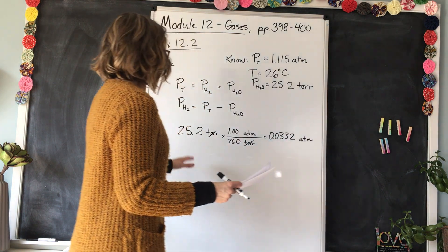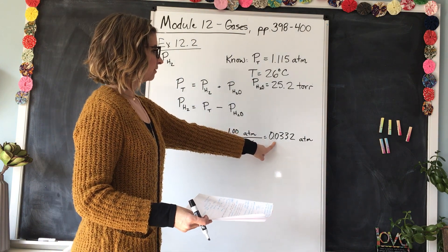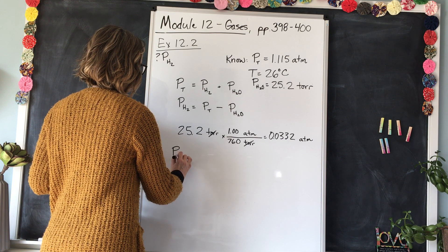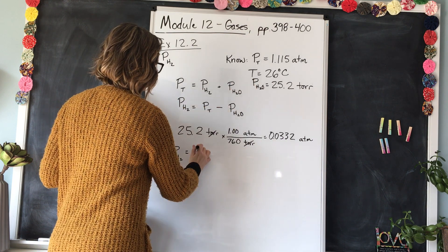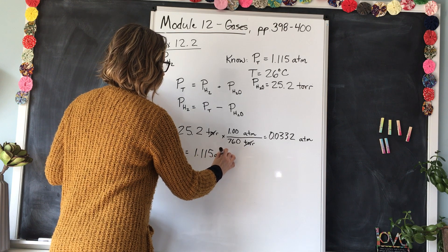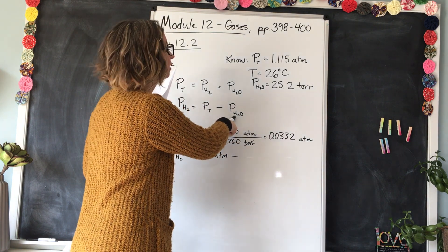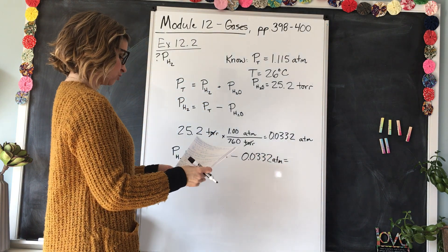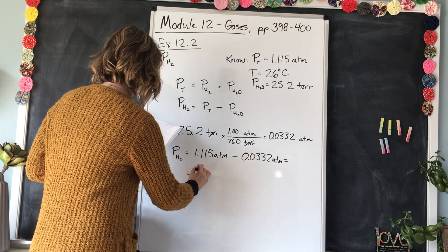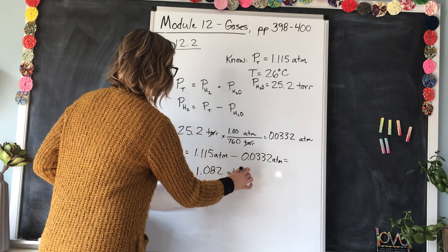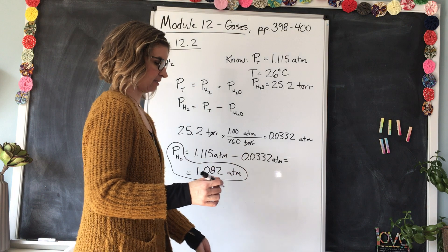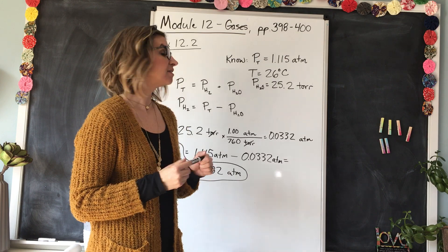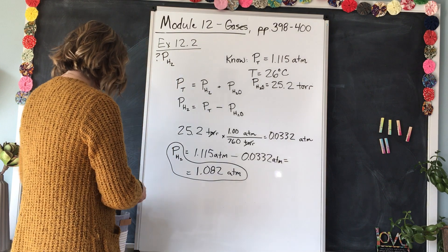Now we have the water vapor pressure in atmospheres and can apply the formula. The partial pressure of hydrogen equals the total pressure, 1.115 atmospheres, minus the partial pressure of water vapor, 0.0332 atmospheres. Doing that subtraction gives us 1.082 atmospheres — that is the partial pressure of the hydrogen gas after removing the water vapor contribution. That's how you use Dalton's law of partial pressures.